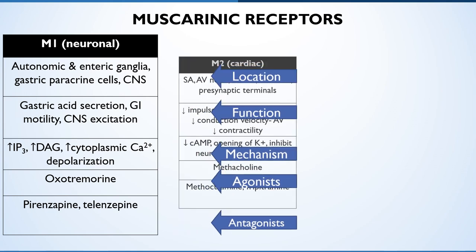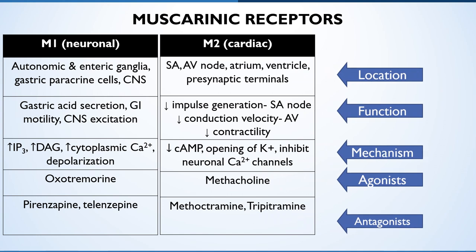Let's see the cardiac type, M2 receptors. These are mainly located on the myocardium, on smooth muscle, and also on the presynaptic terminals of peripheral and central neurons. They exert mainly inhibitory effects; their activation results in vagal inhibition of the heart. Available agonists are non-selective; however, methacholine has prominent M2 agonistic action. Antagonists like methoctramine and tripitramine are fairly selective antagonists at M2 receptors.